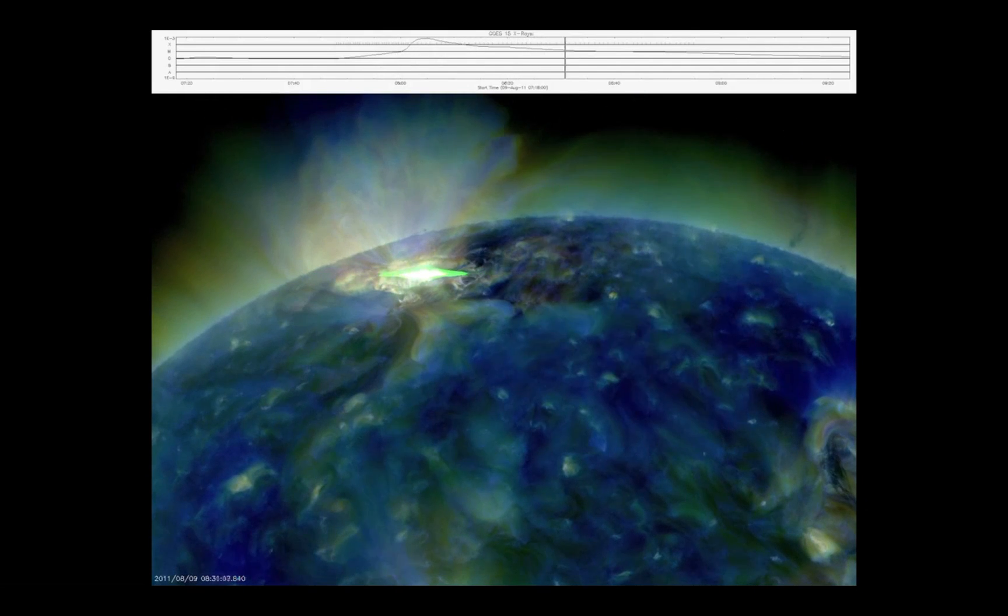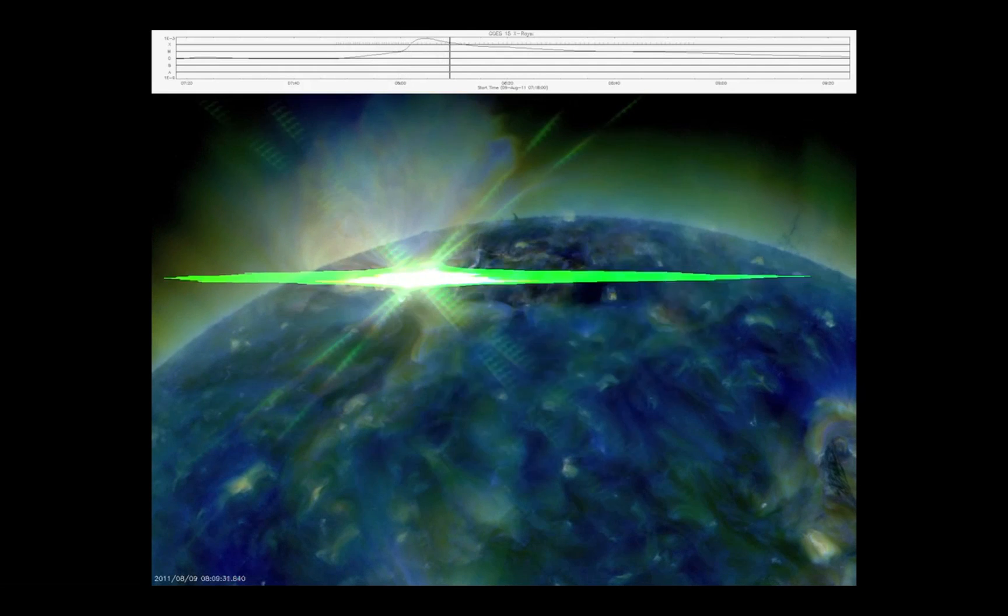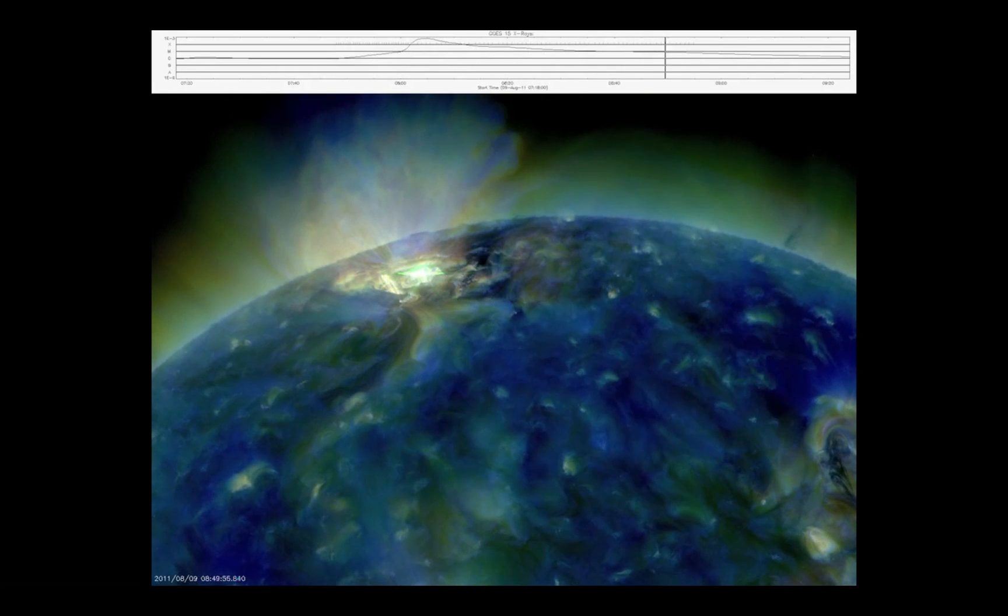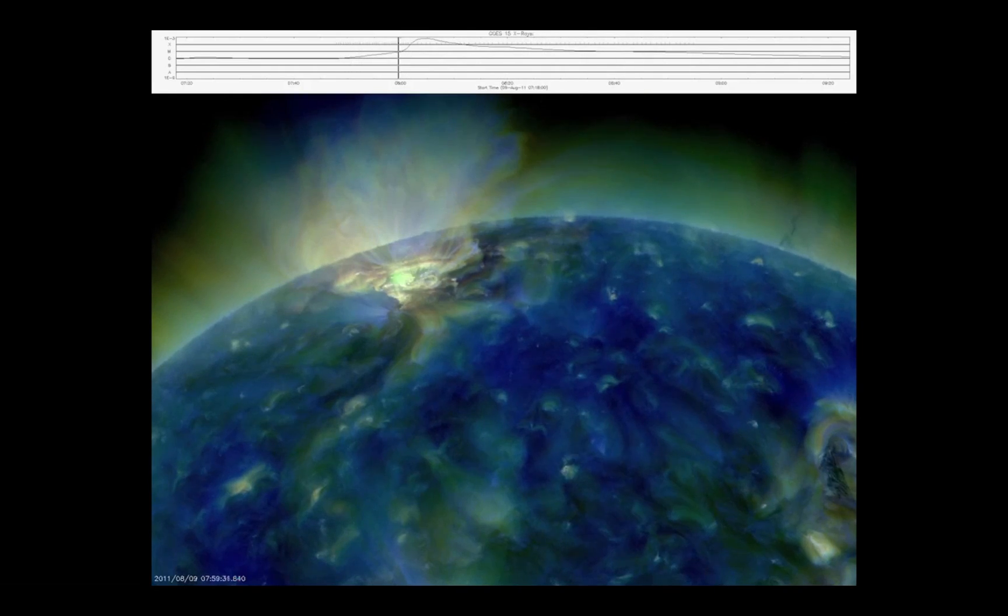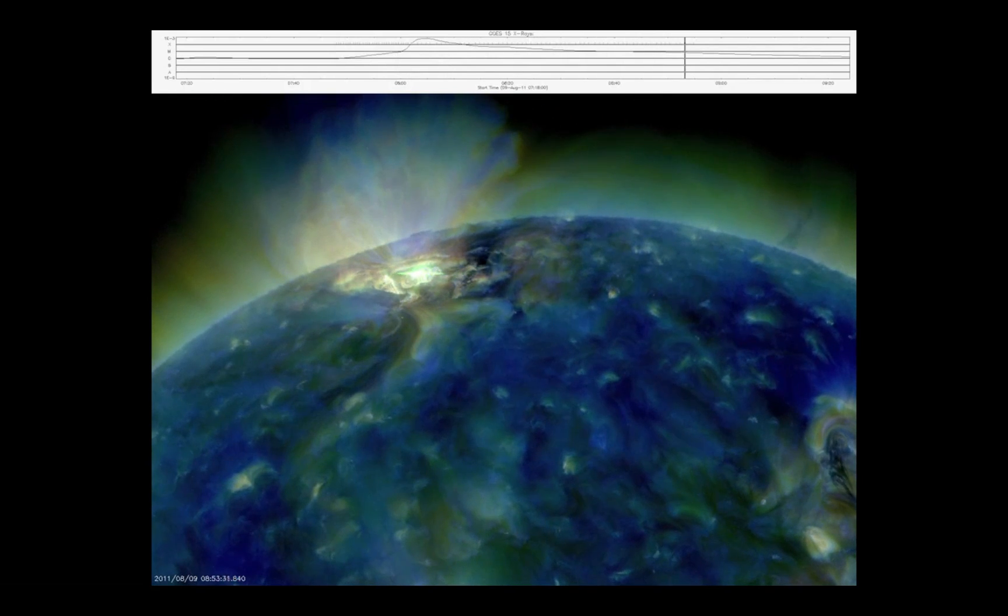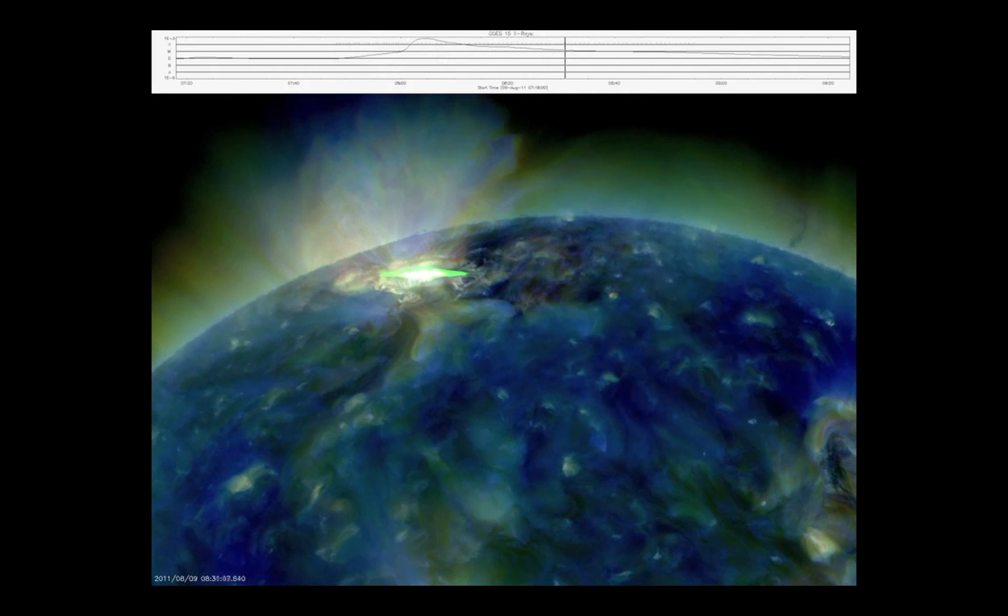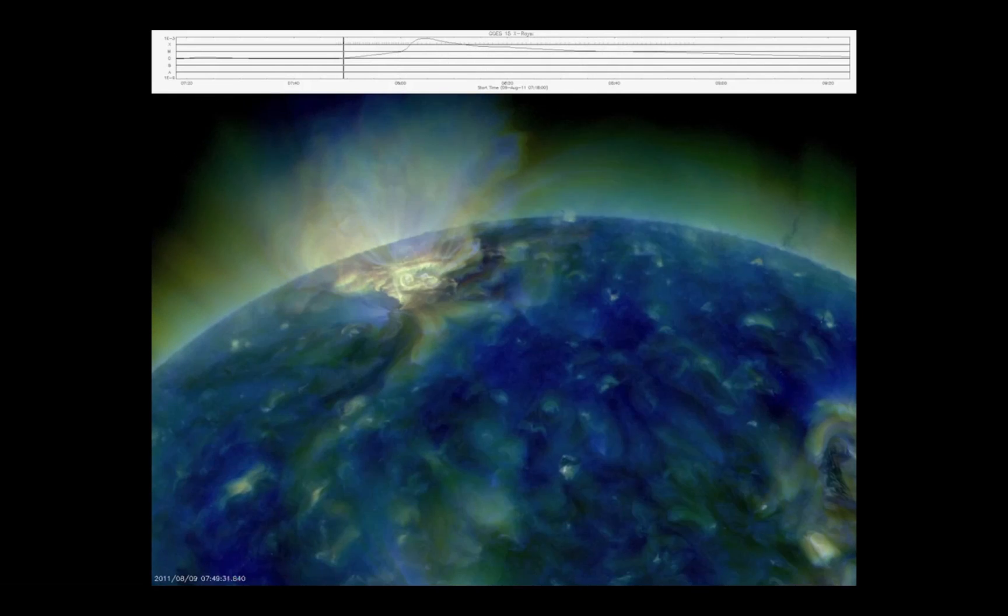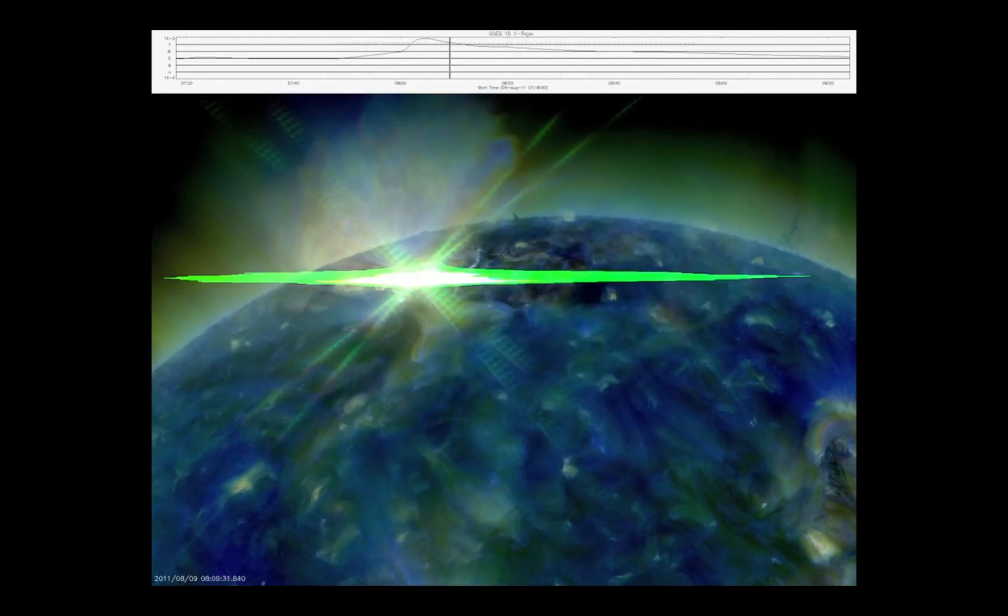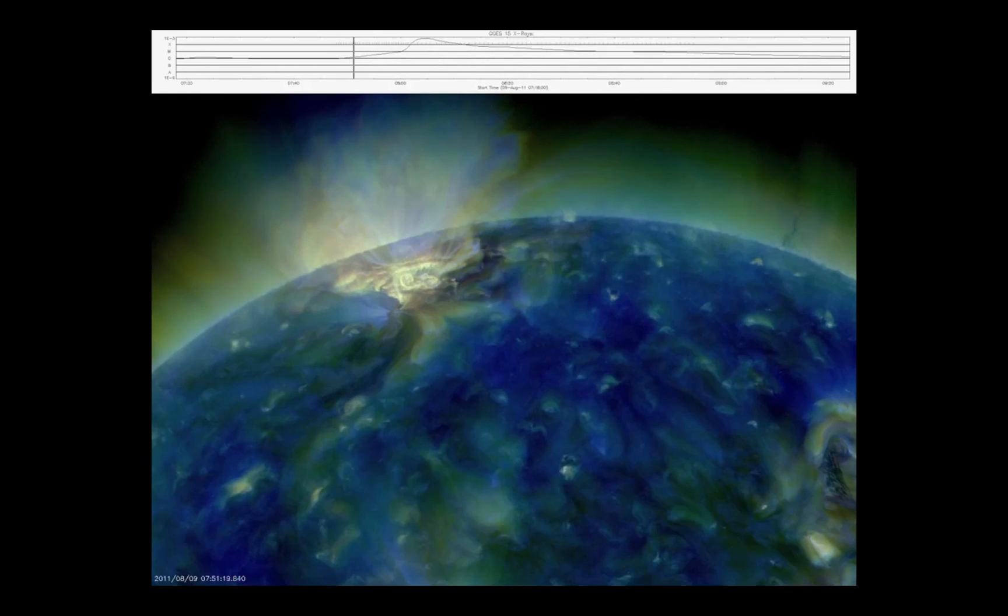And also associated with it, you can see there's a big wave coming out and this produced a particle event. And so one of the cool things about where it is on the sun is the magnetic fields from the sun come out in a spiral.